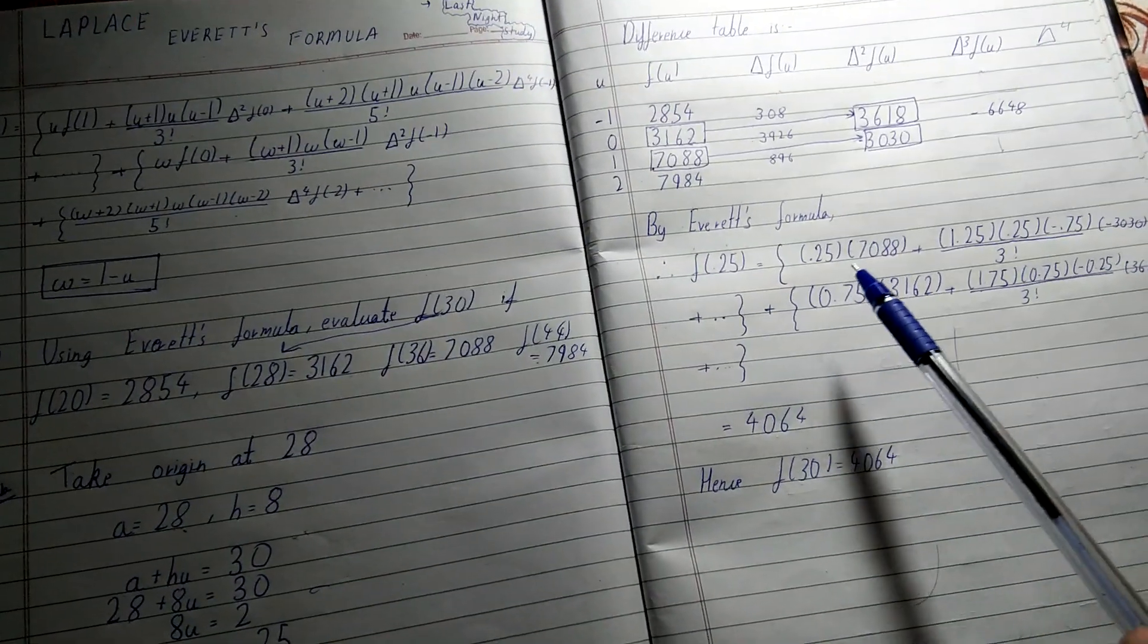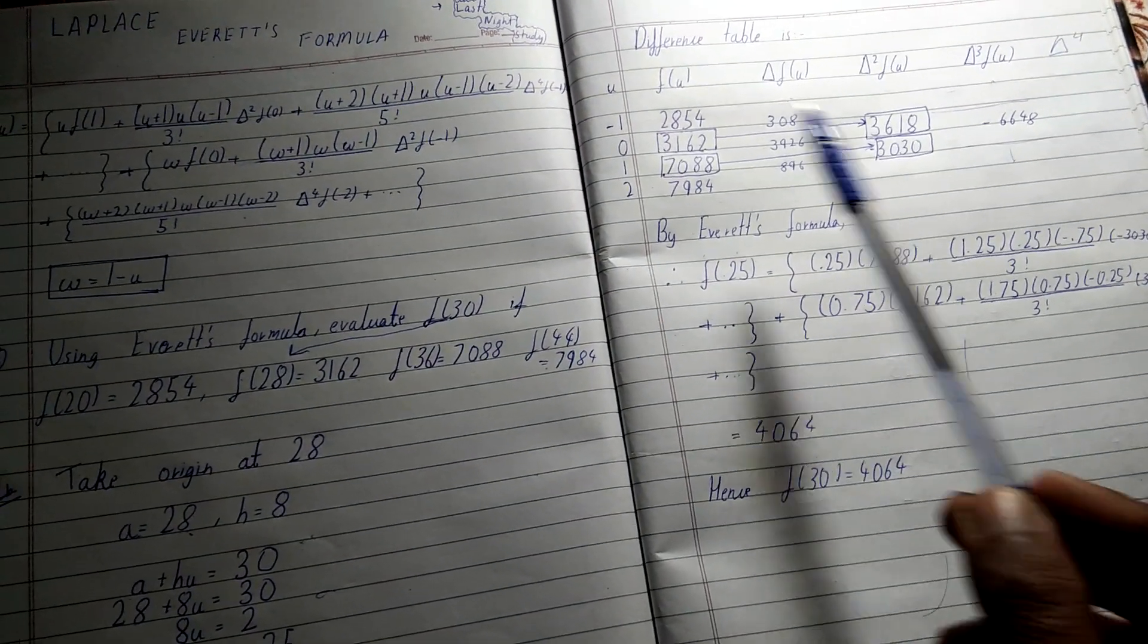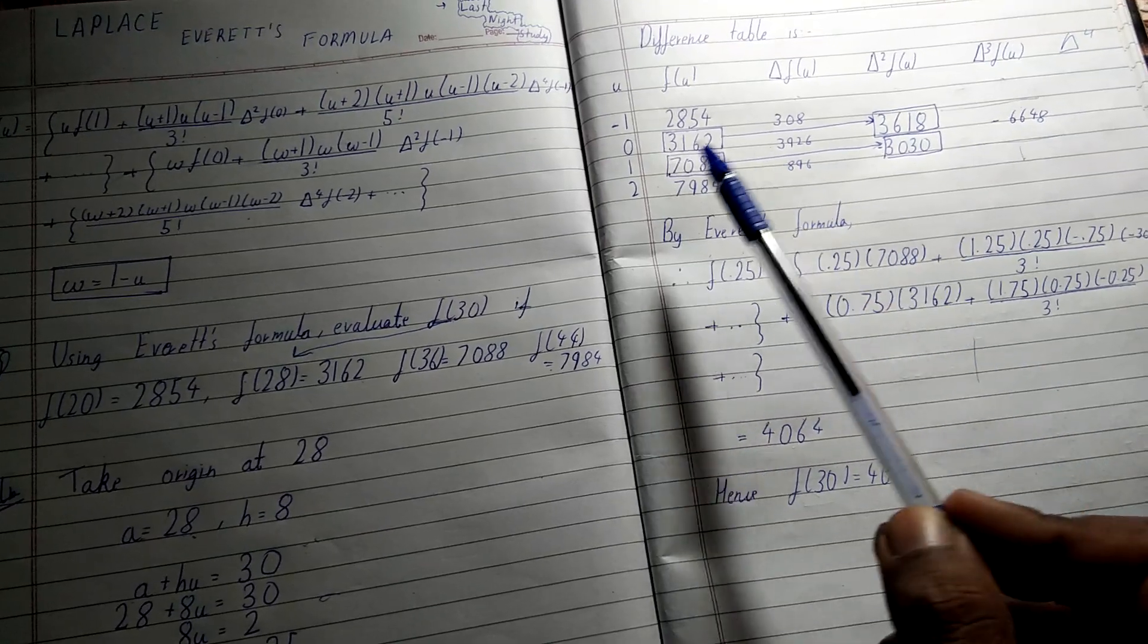You can see that. And after that, what will we do? Plus (u+1)·u·(u-1)/3!. U+1 = 1.25, u = 0.25, u-1 = -0.75, divided by 3!.